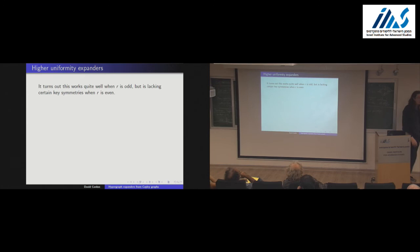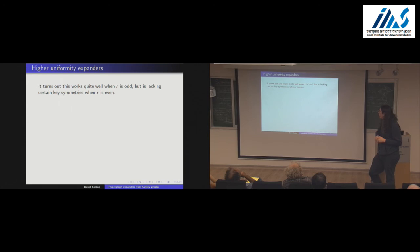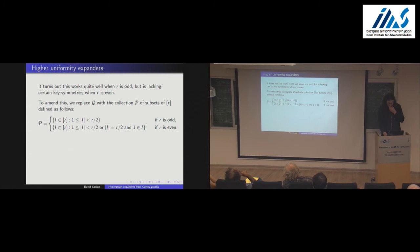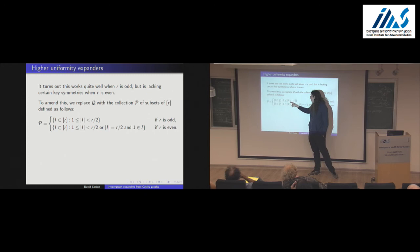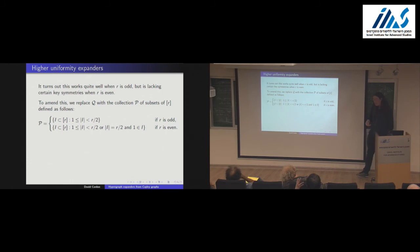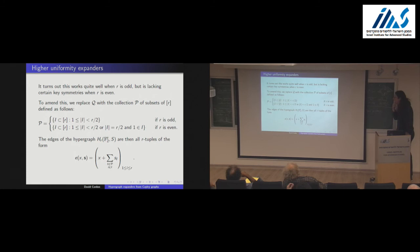There's a slight caveat: it works very well in odd uniformities, but in even uniformities there are certain symmetries you need that don't exist. So the thing we actually work with is something slightly more complicated. In the odd case, you're interested in all subsets of {1,...,r} of size less than r/2. In the even case, you take the same thing but then take half the sets of size r/2. The triples are defined in the same way, using this set P instead of Q to define which triples are allowed.